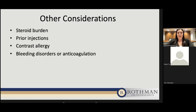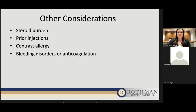Other considerations when deciding if a patient would benefit from an epidural include their individual presentation, history, physical exam, comorbid conditions, and imaging findings. With steroid burden, we don't want to give patients too much steroid — we want an appropriate dose and not too frequently, as there are other risks. For example, with osteoporosis, we might be more hesitant to provide steroids because it can progress the condition. For patients with diabetes or high blood pressure, steroids can cause a short transient increase in glucose or blood pressure, respectively.